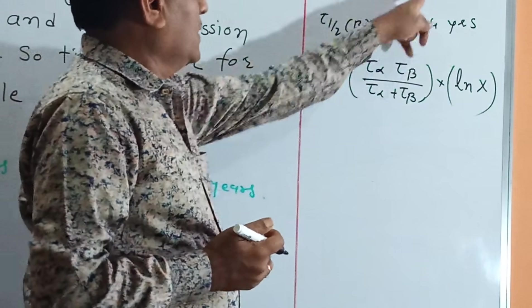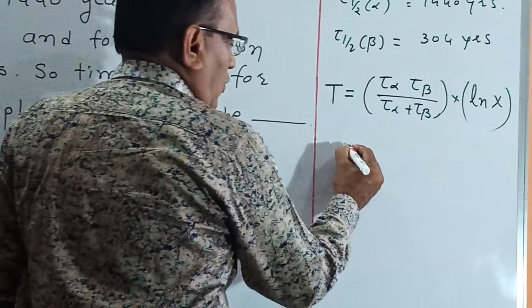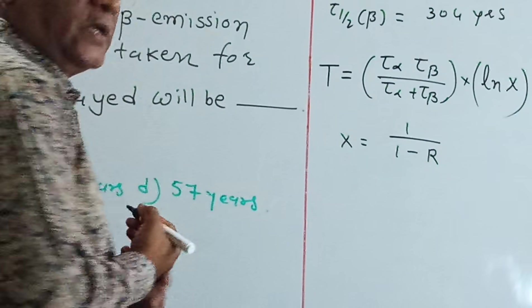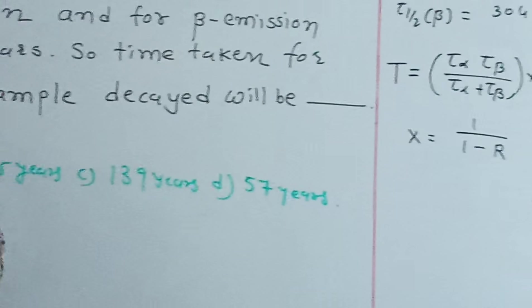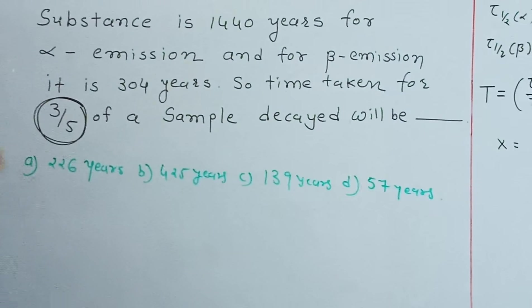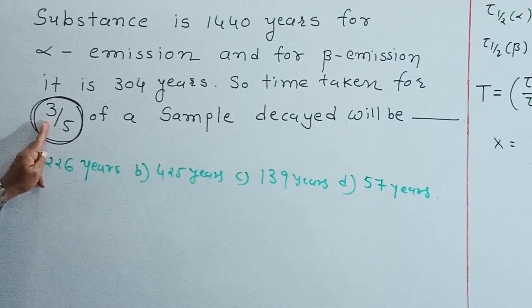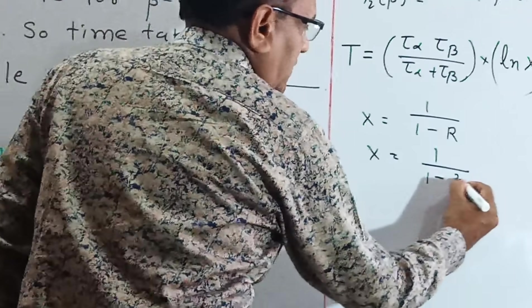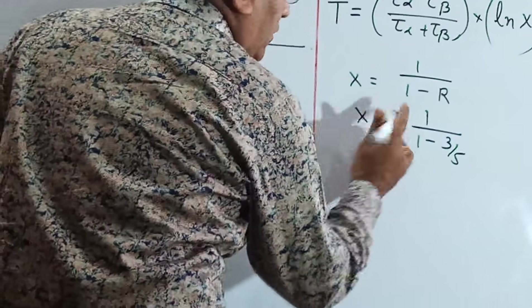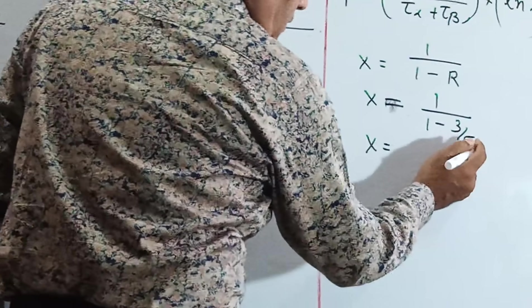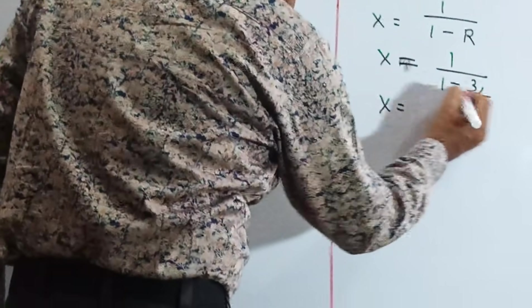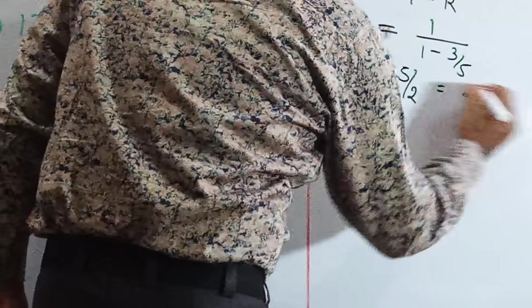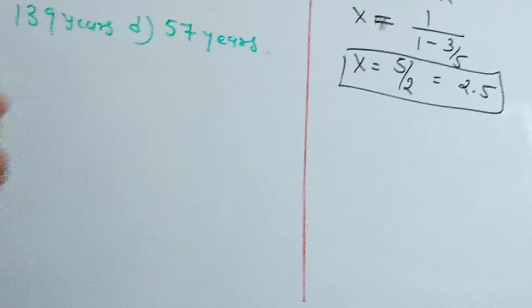Now, what is x? x equals 1 divided by (1 minus r), where r is the given ratio of the sample that has decayed. Here r equals 3/5, so x equals 1 divided by (1 minus 3/5) equals 1 divided by (2/5), which gives x equals 2.5.